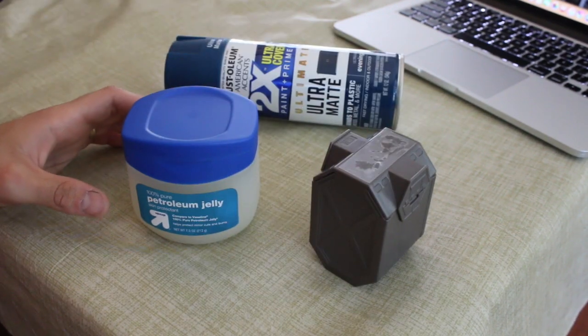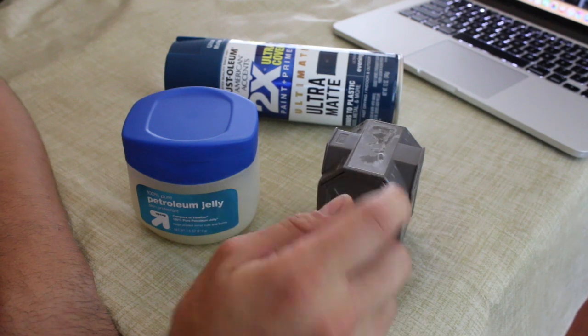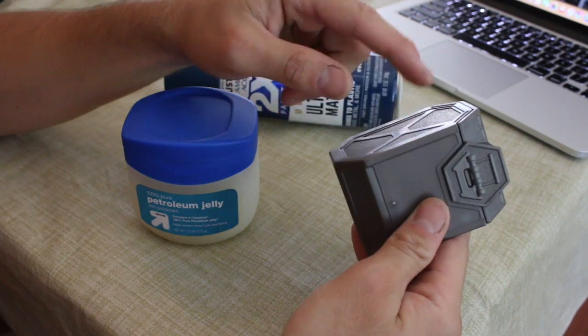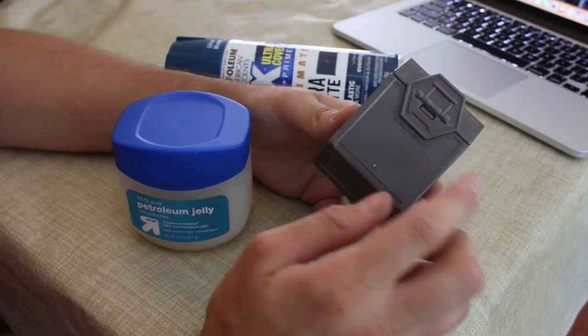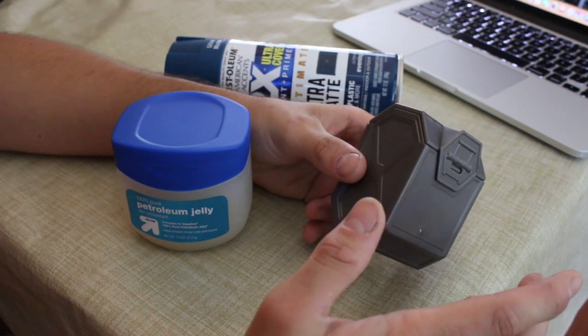But what you're going to want to do is spray paint the item that you want the color you want to be underneath the chip. So I would have spray-painted this gray or silver if I wanted to.